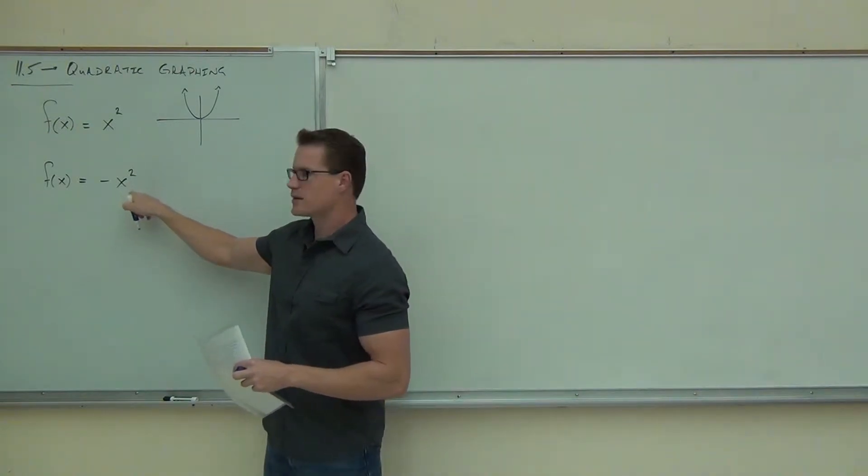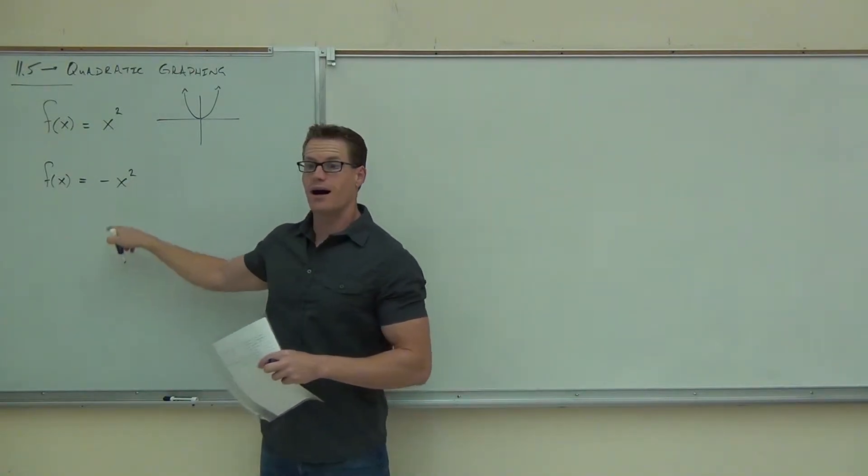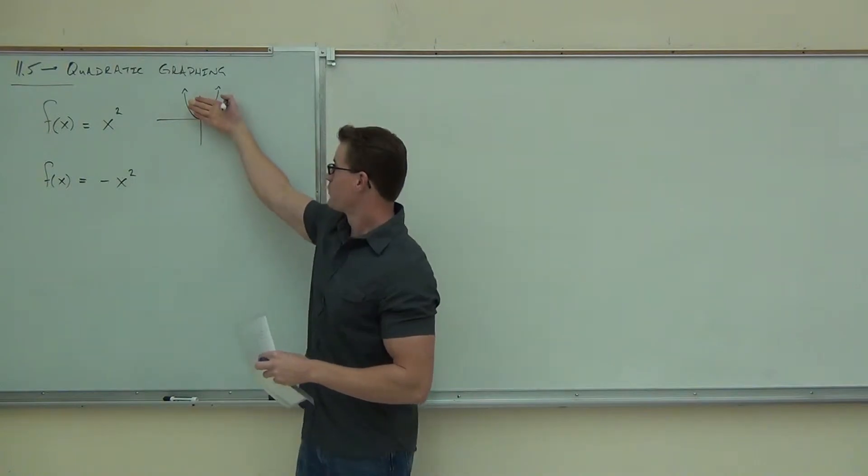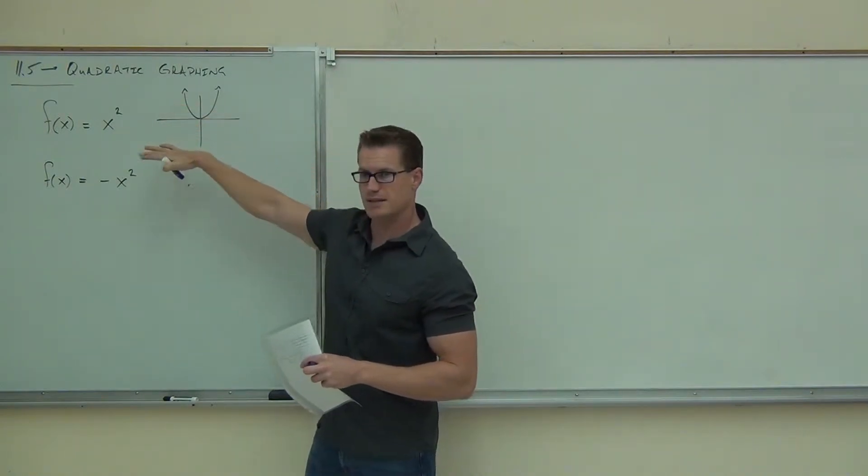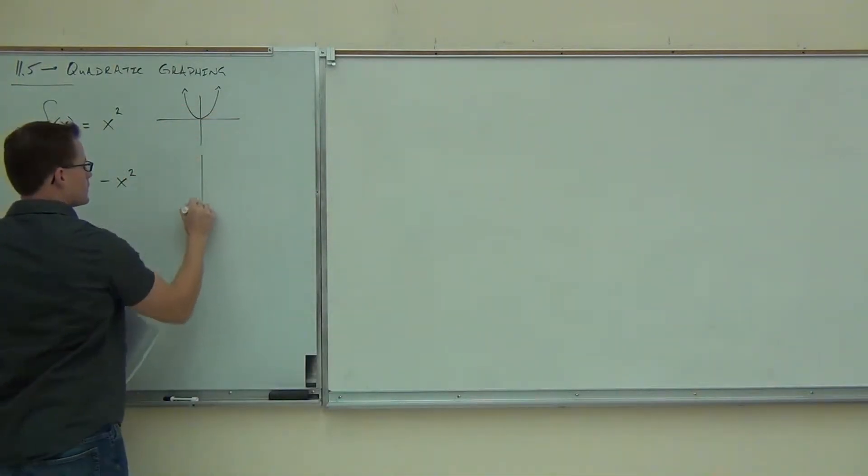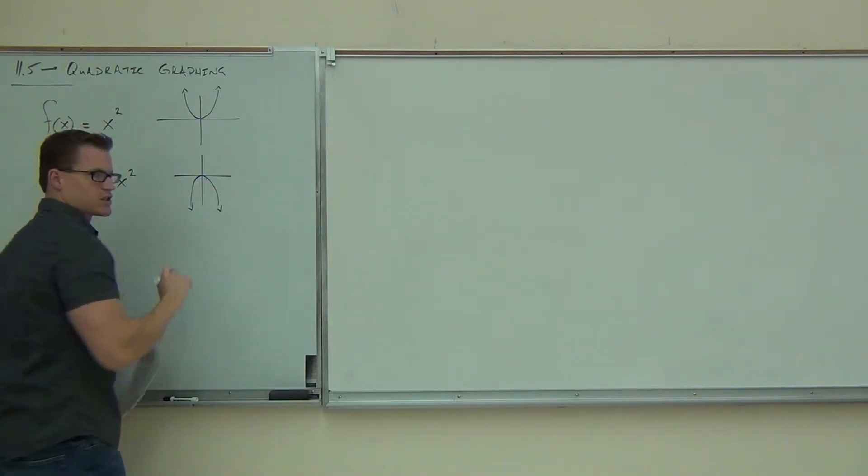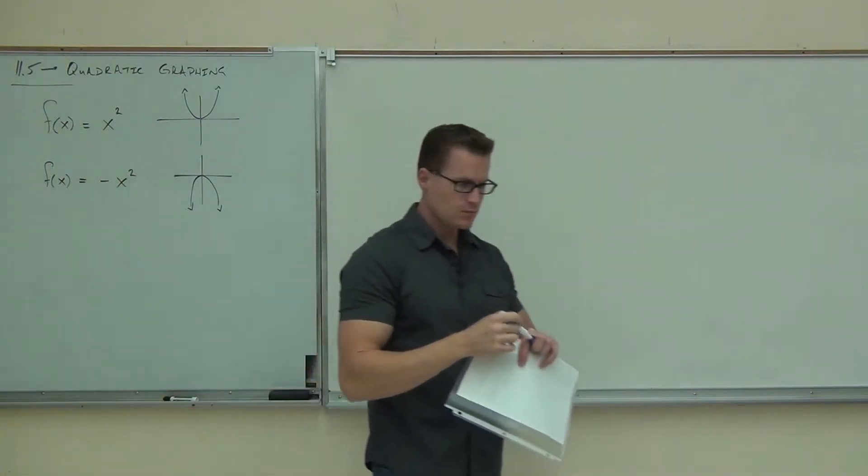What did this one look like? So this right here, that negative, flip this or flip that across the x-axis. Pretty much the same looking graph though, right?